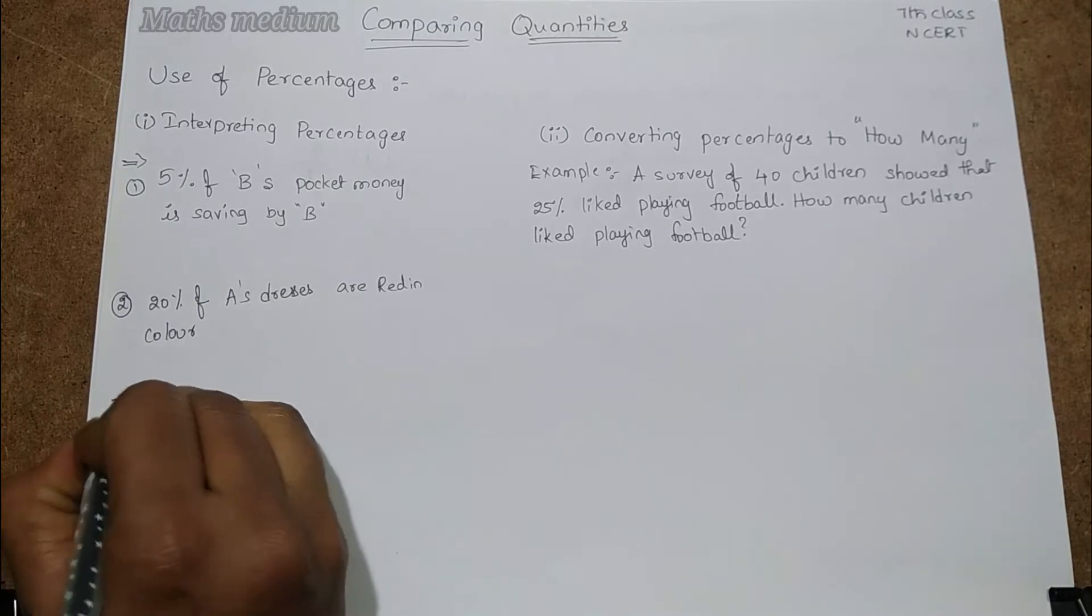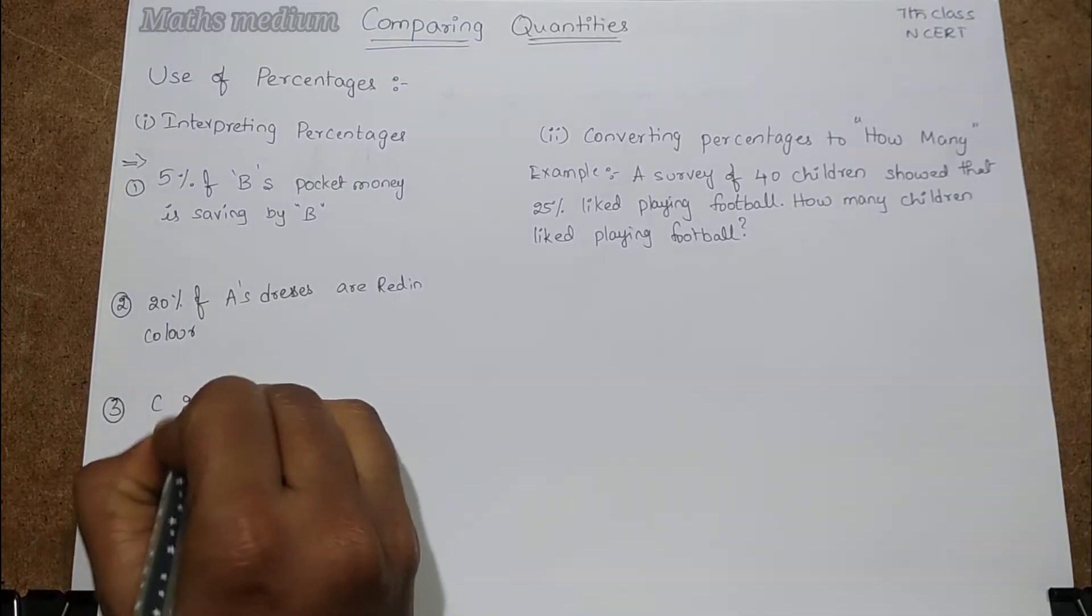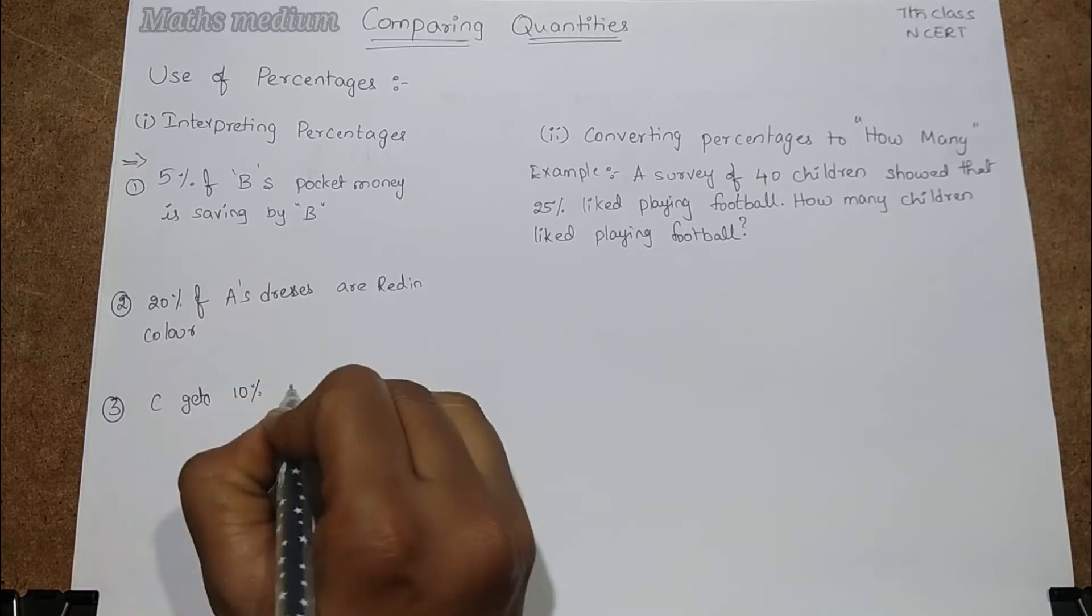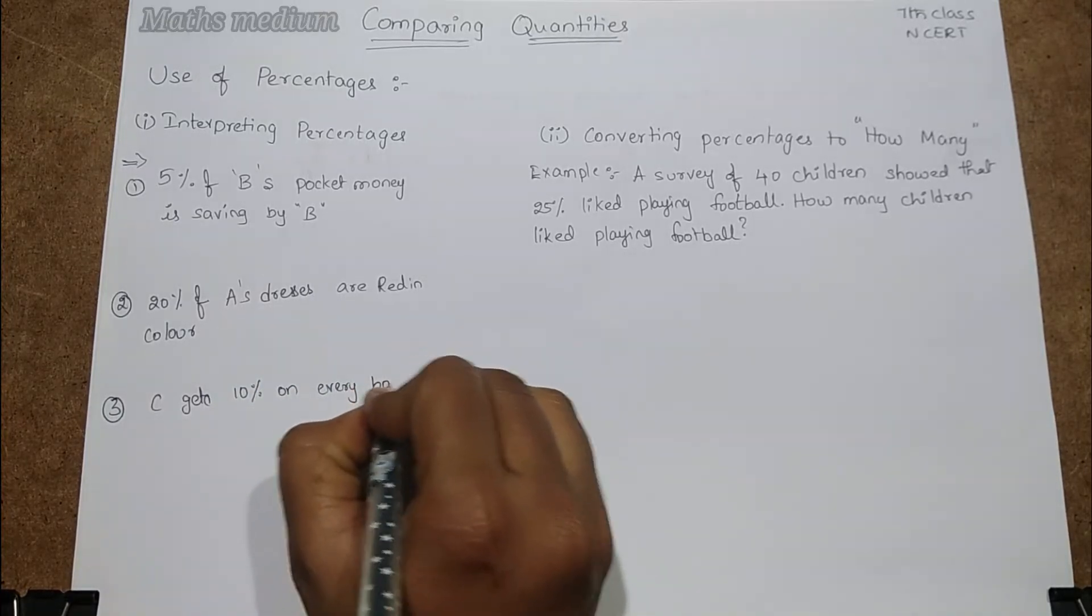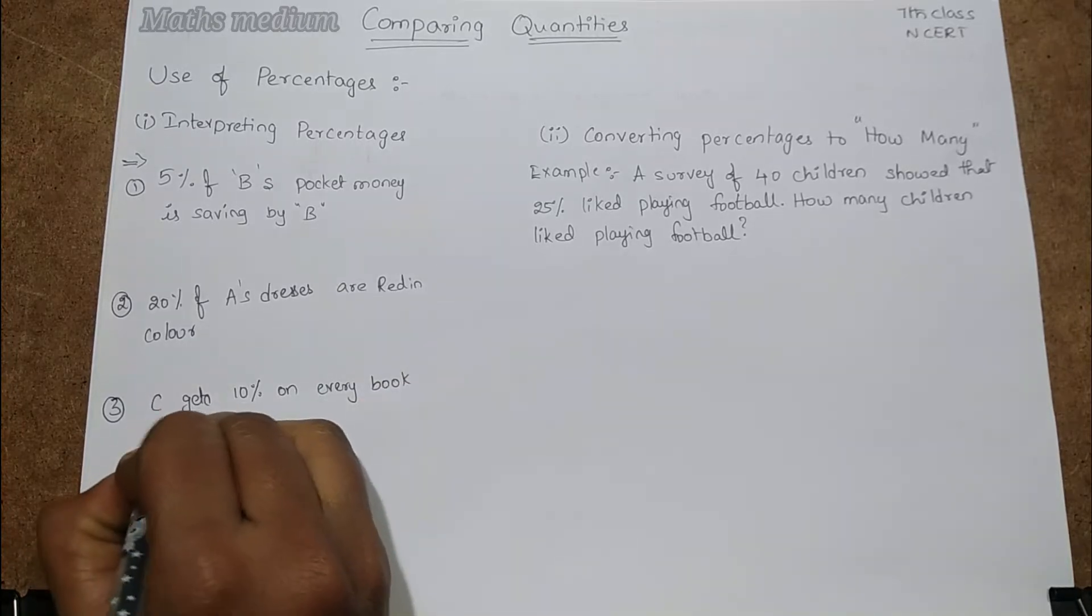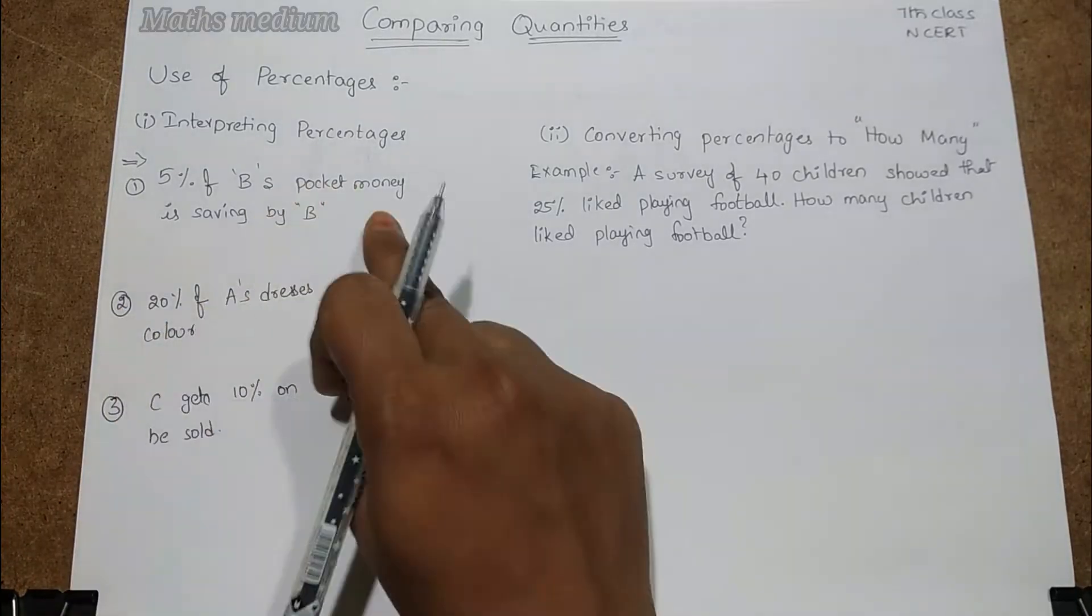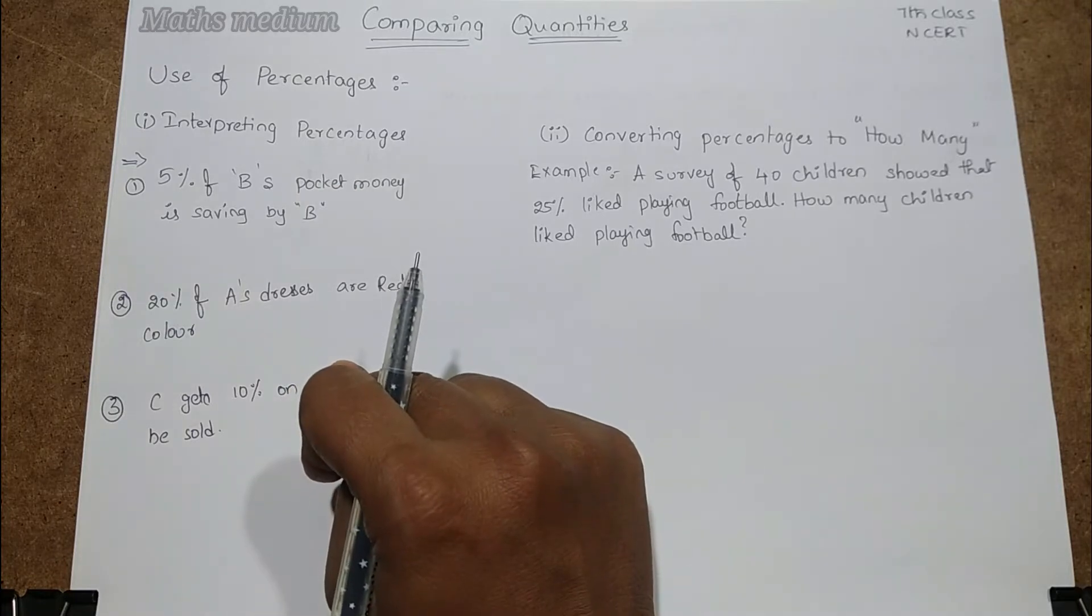Third one is C gets 10% on every book he sold.